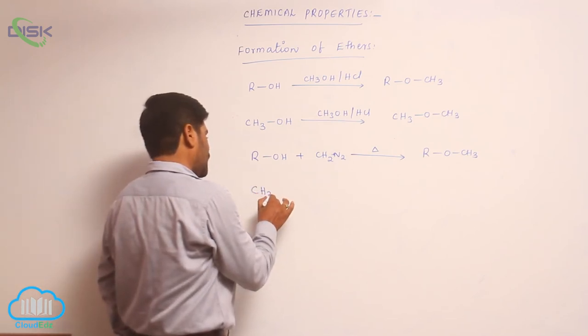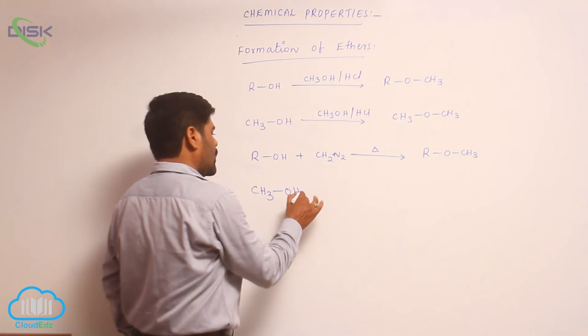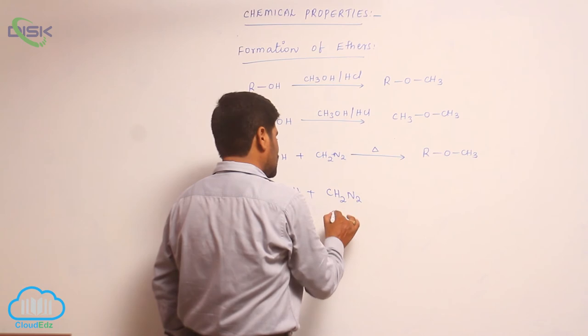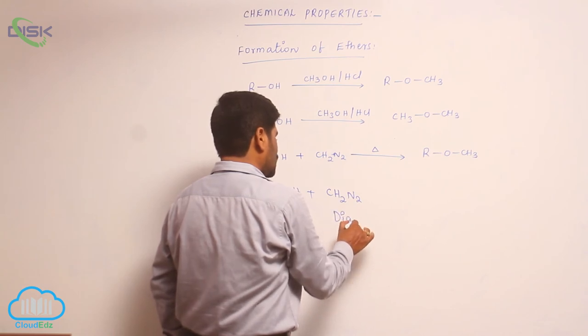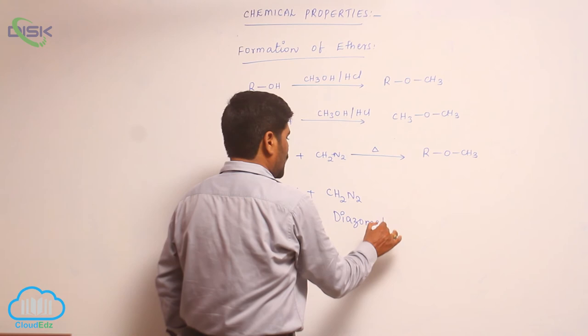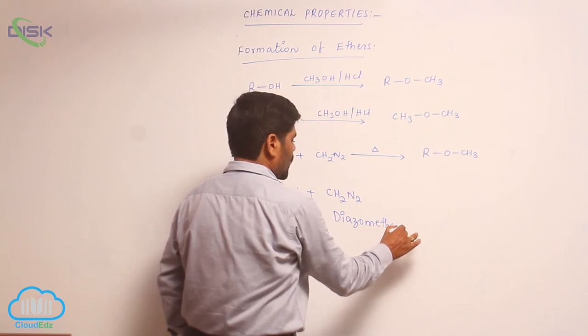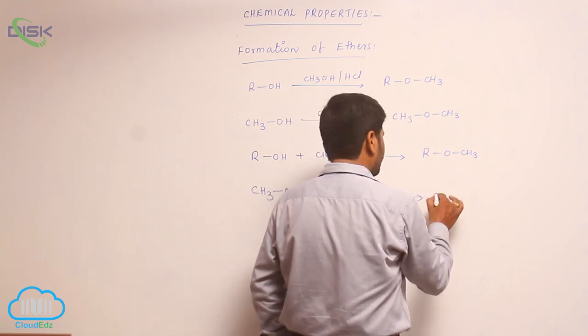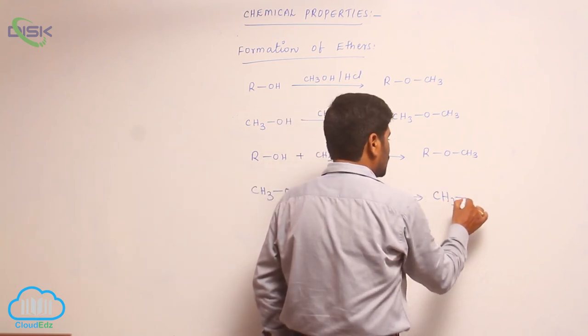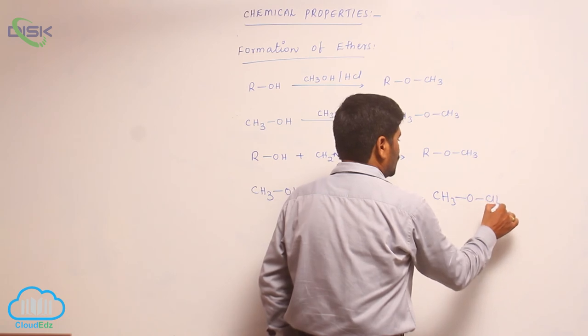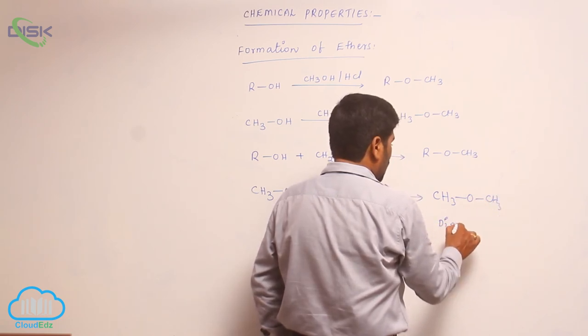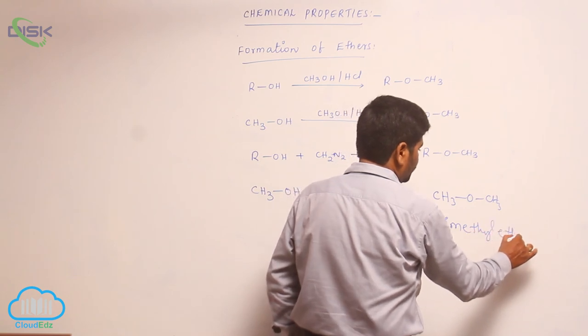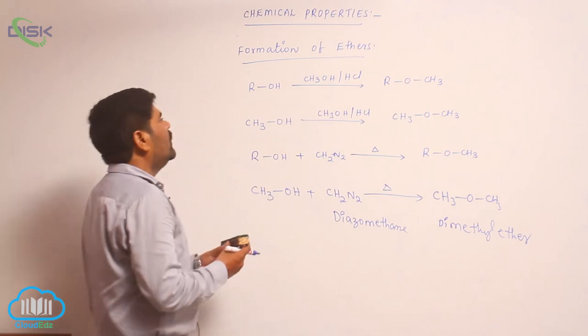When methyl alcohol reacts with diazomethane, this is known as diazomethane followed by heating, it converts into CH3OCH3, known as dimethyl ether.